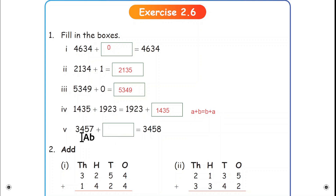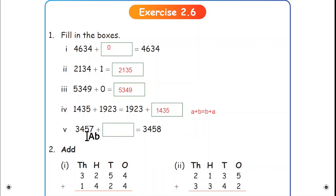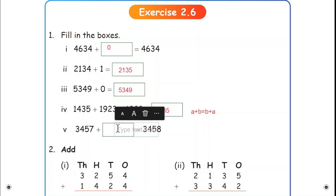Fifth one: 3,457 plus box is equal to 3,458. On the right hand side, the number is increased by one. If we add 1 we can get the next number. So the answer is 1.